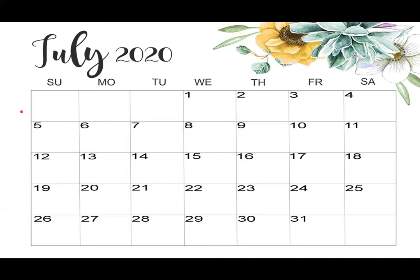We will look at this calendar and learn a few things. First, we will see what the letters written up at the top mean. Su is for Sunday, Mo is for Monday, Tu is for Tuesday, We is for Wednesday, Th is for Thursday, Fr is for Friday, and Sa is for Saturday. So we know these are the 7 days of the week.